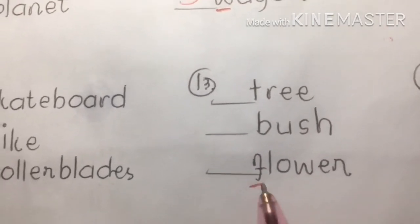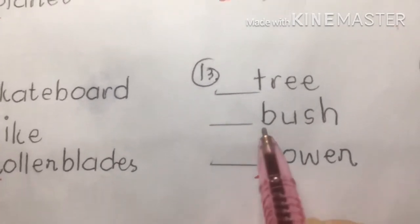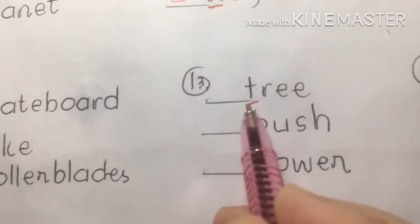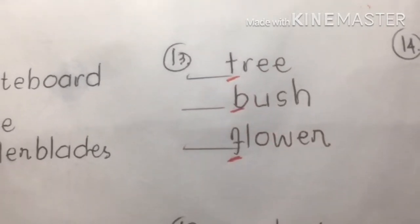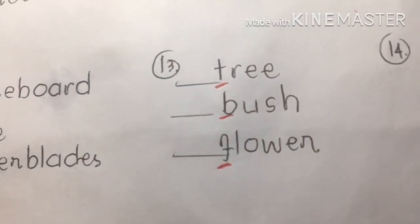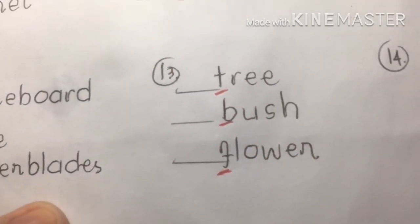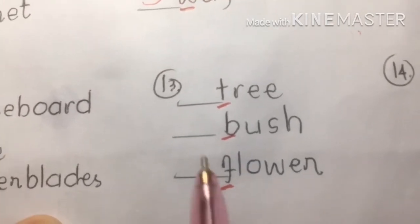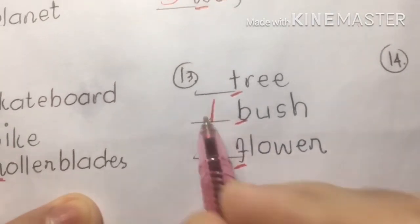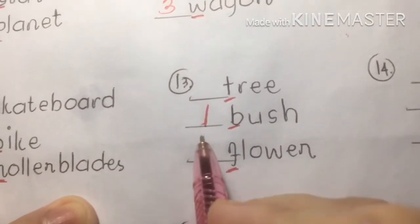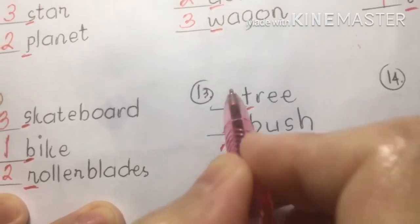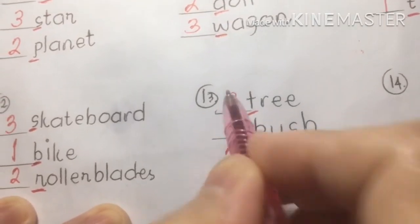Number thirteen: tree, bush, flower. Underline the first letter — this is the technique to avoid confusion. The answer arranges them by their initial letters.